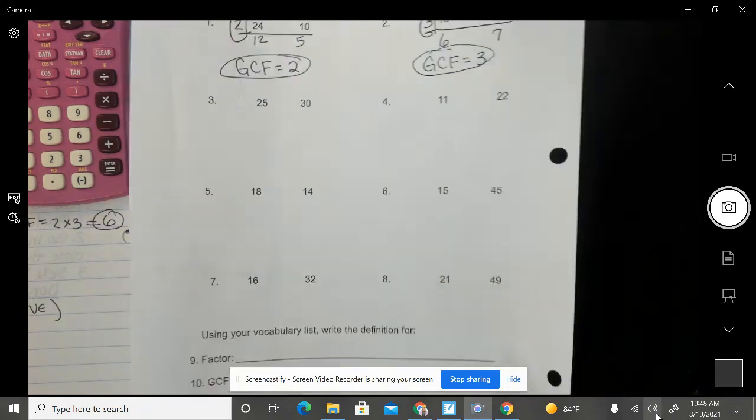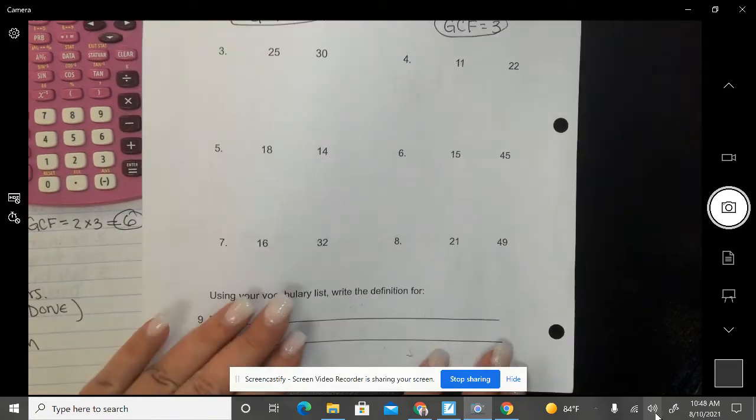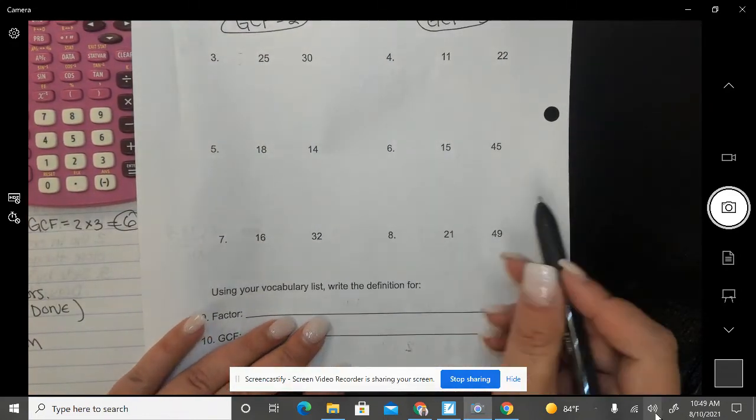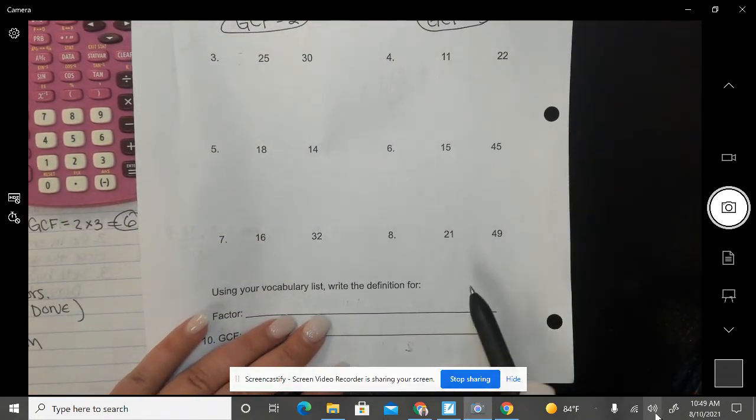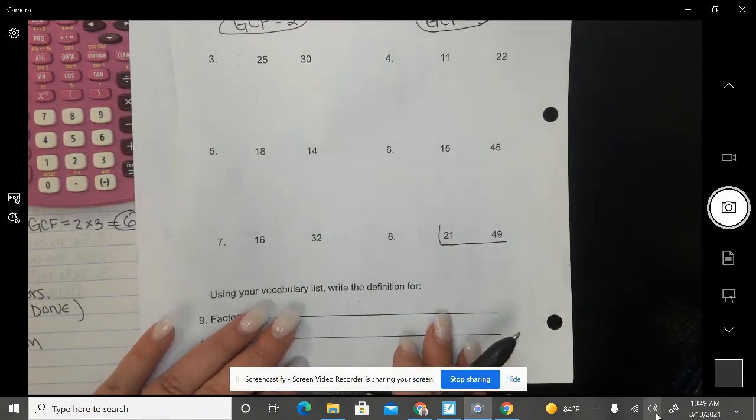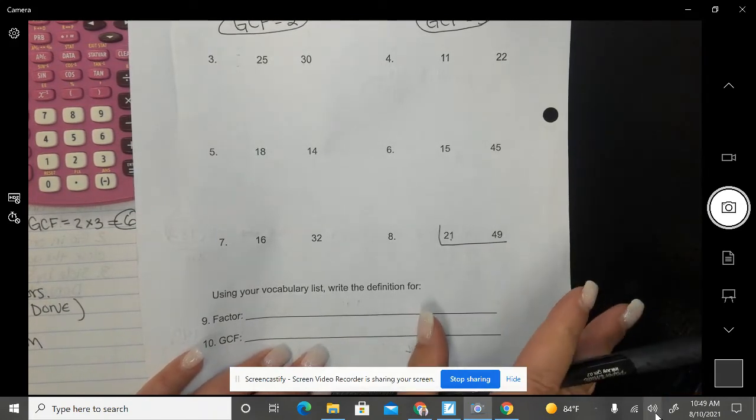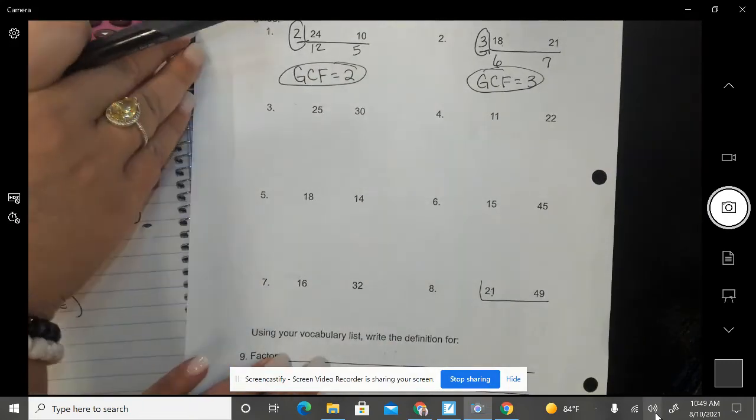Last one I want to do, I want to skip down to number 8, 21 and 49. Those are not the most friendliest numbers we've ever seen, so I want to try this one. So for 21 to 49, I'm going to draw the slide, and I'm going to see what common factors do they have in common. They're both odd, so 2 is not going to work. So we want to see if 3 can work.